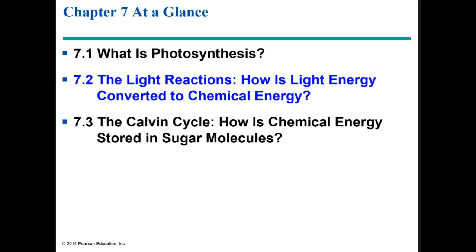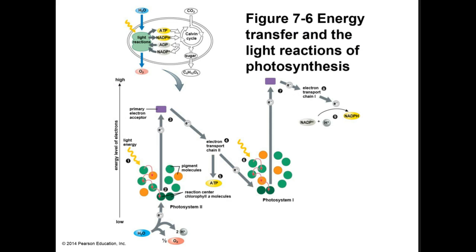Now let's take a closer look at the light reactions, where the energy of sunlight is harnessed and converted into storage molecules for making carbohydrate later. The light reactions occur in association with the thylakoid membranes, which contain many photosystems — each consisting of a cluster of chlorophyll and accessory pigment molecules surrounded by various proteins. Two photosystems, photosystem II and photosystem I, work together during the light reactions, each with a unique electron transport chain. The overall path of electrons is: photosystem II → electron transport chain 2 → photosystem I → electron transport chain 1 → NADP+.